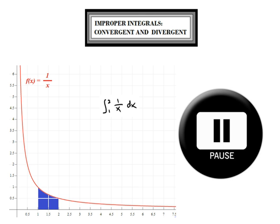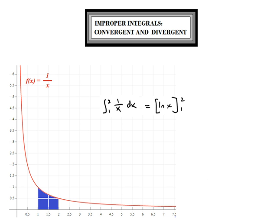Why don't you press pause to find the value of this definite integral. We will take an antiderivative and apply the first fundamental theorem of calculus. The natural log of 1 is equal to 0, and we get a result of the natural log of 2. So the area under this graph is the natural log of 2, which is roughly equal to 0.69.